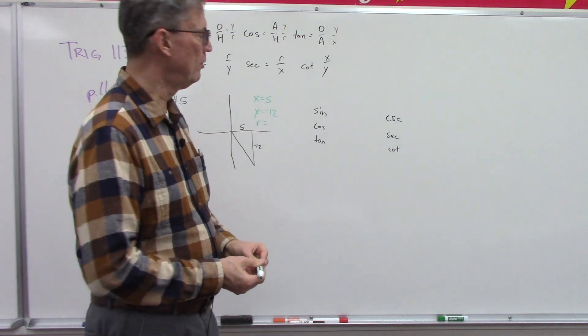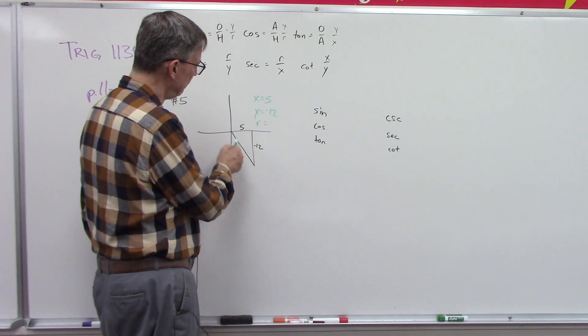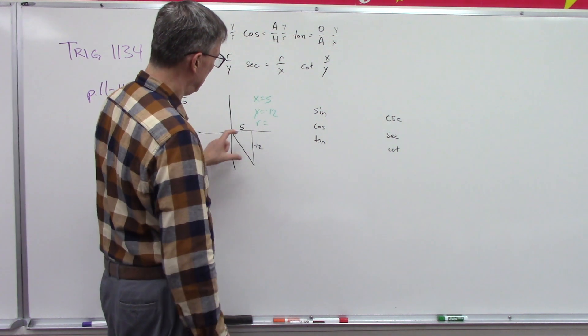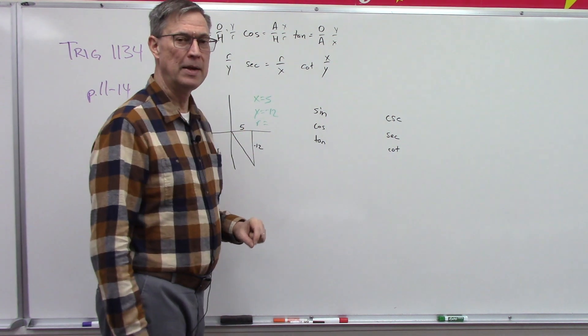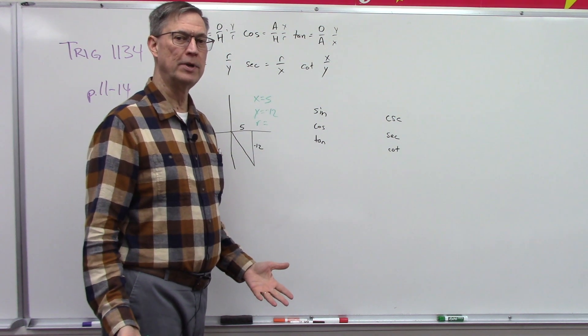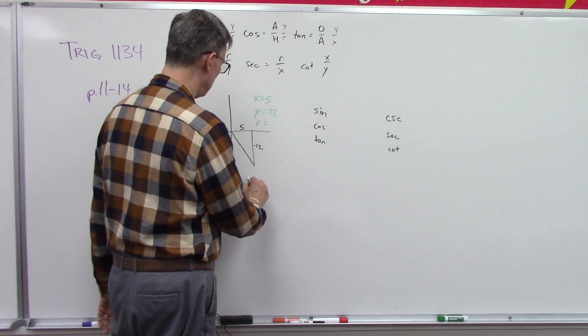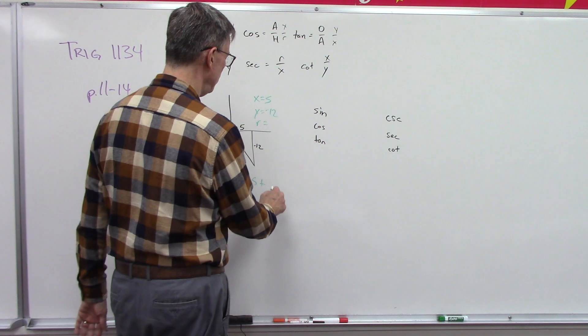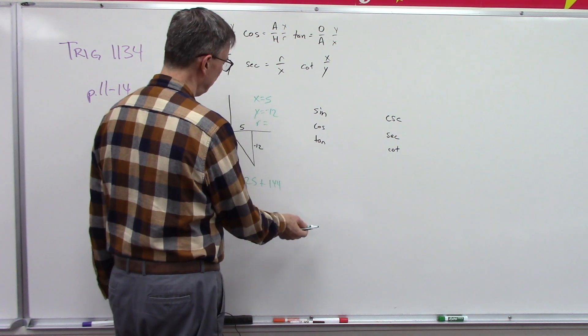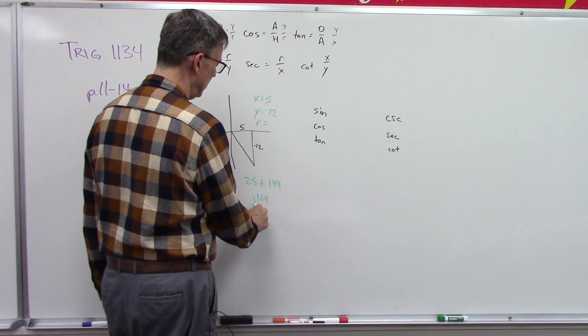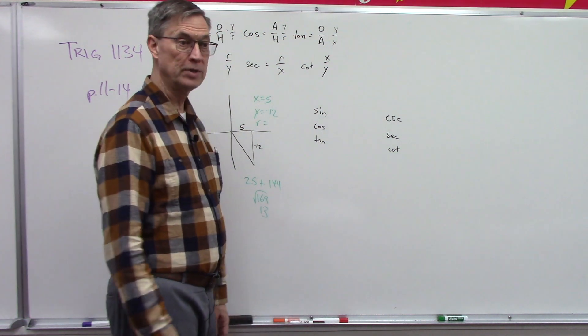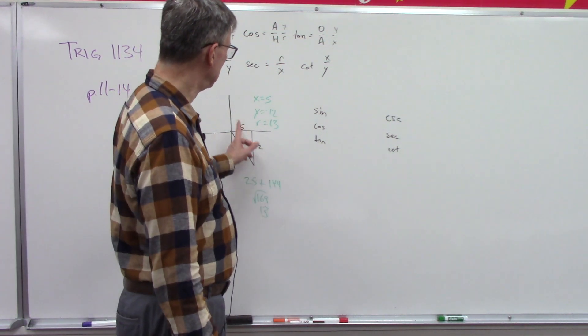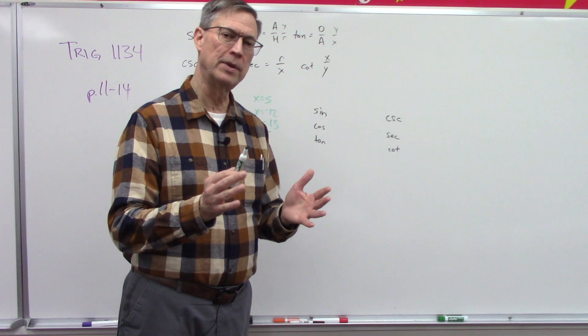So the way we solve for that is by doing - that's this length here - we can do Pythagorean's theorem. Remember that? Take this side squared plus this side squared and then you do the square root of the number that you get. So five squared is 25, negative 12 times negative 12 would be 144, and then when you add that you get 169, and the square root of that is 13. So the radius is 13. No matter whether one of these is positive or negative, when you square it you're going to get rid of that negative, so the r is always a positive number.